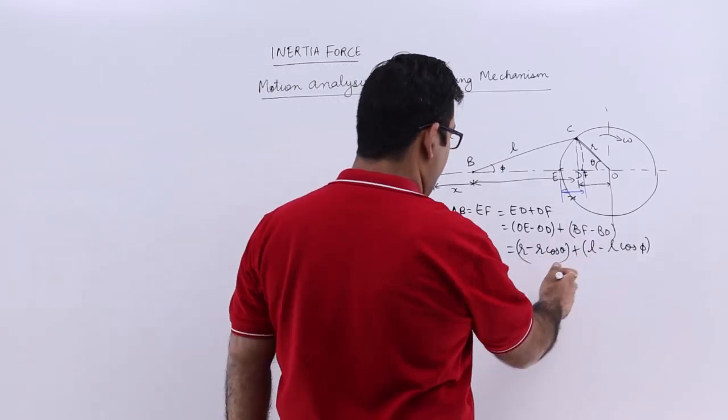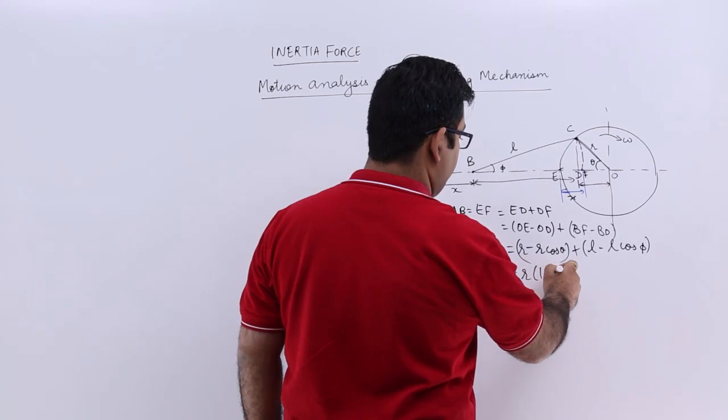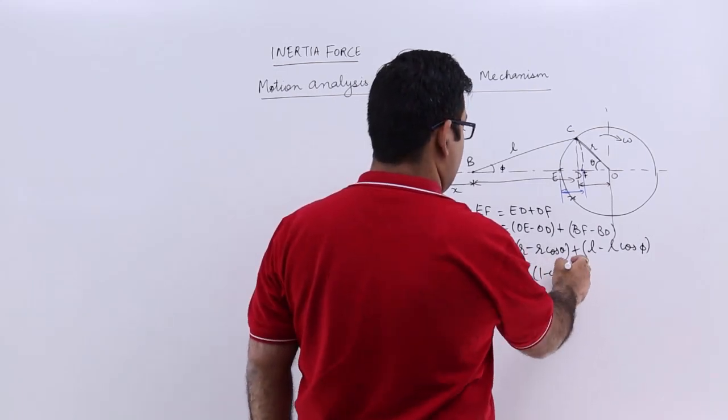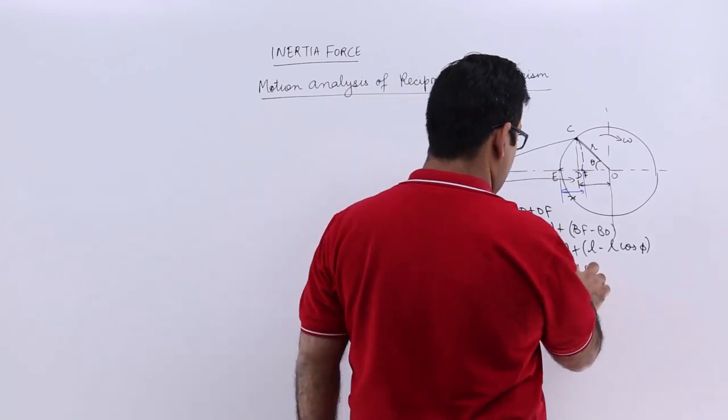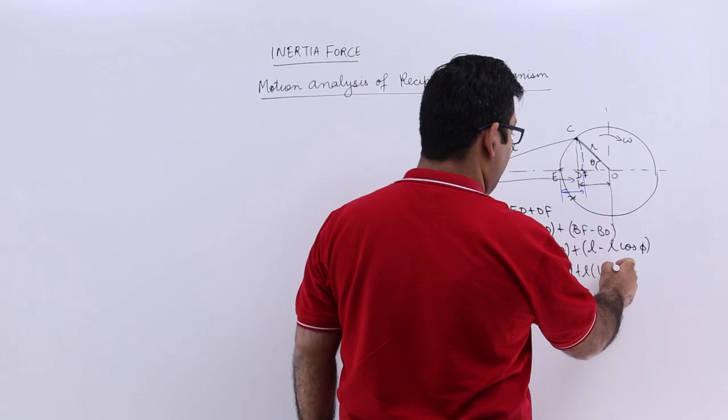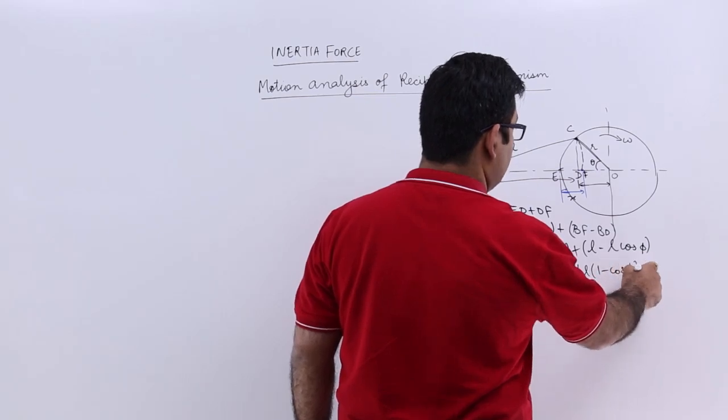You can take R and L common from these two terms. Plus L into 1 minus cos phi.